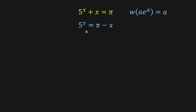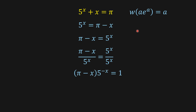I'm just going to send x to the other side of the equation and then flip the equation. From here I'm going to divide both sides by x, by 5 to the power of x. And then we're going to have this. So we have pi minus x here, and in order to have pi minus x in the power, I'm going to multiply both sides of the equation by 5 to the power of pi.